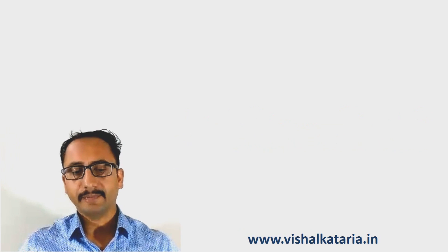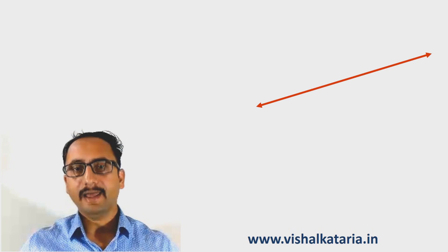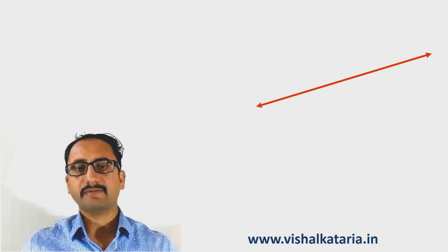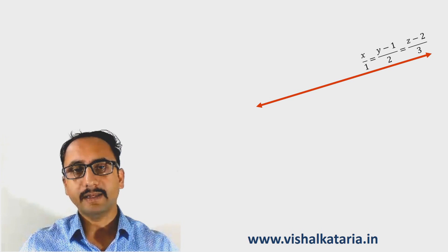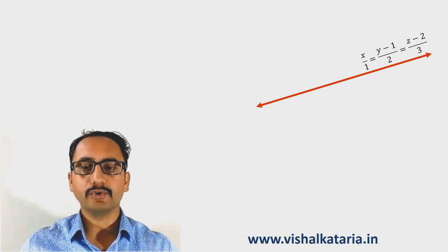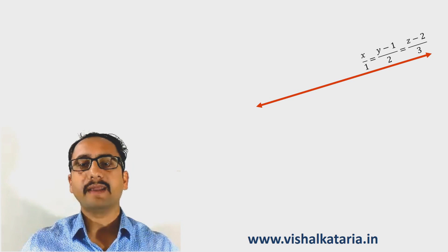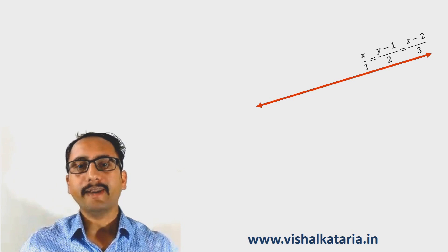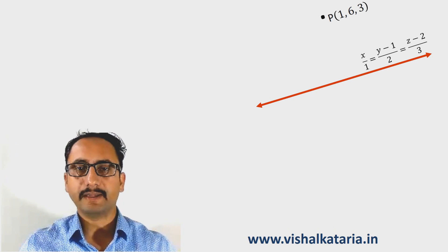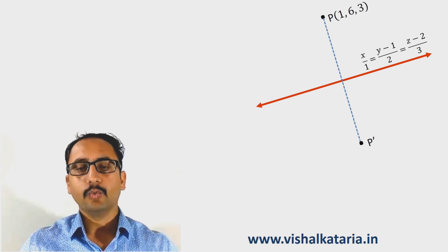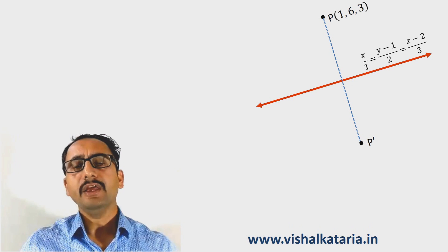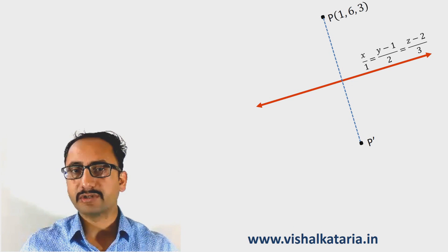Let us consider we have a line whose equation is given to us: x upon 1 is equal to y minus 1 upon 2 is equal to z minus 2 upon 3. A point is given to us whose coordinates are 1, 6, 3, and what we are going to do is find the image of this point, which is P', using the concepts of three-dimensional geometry.